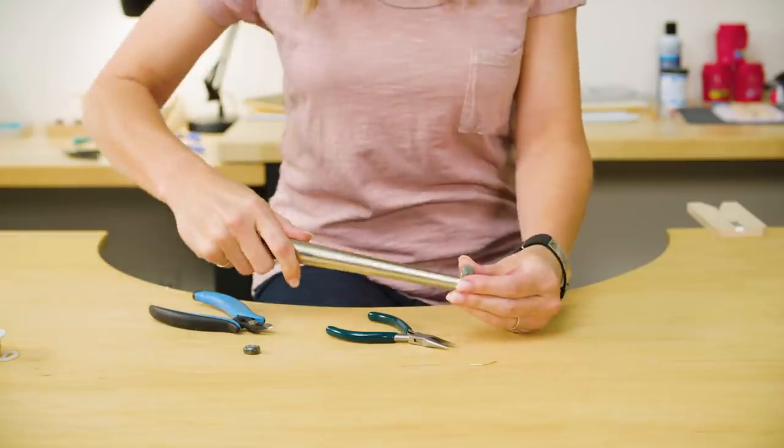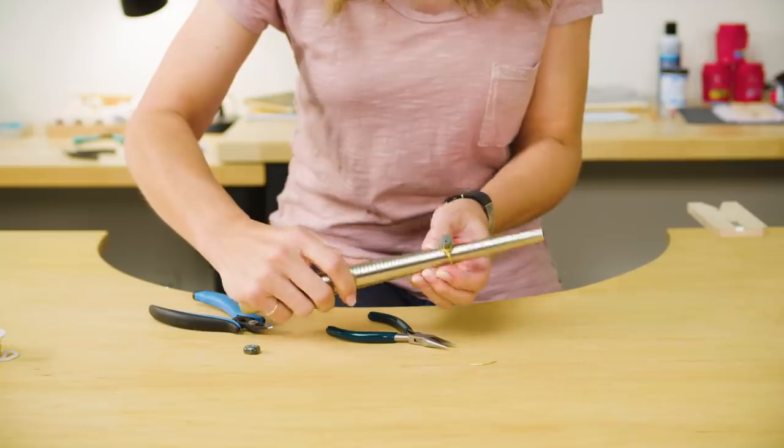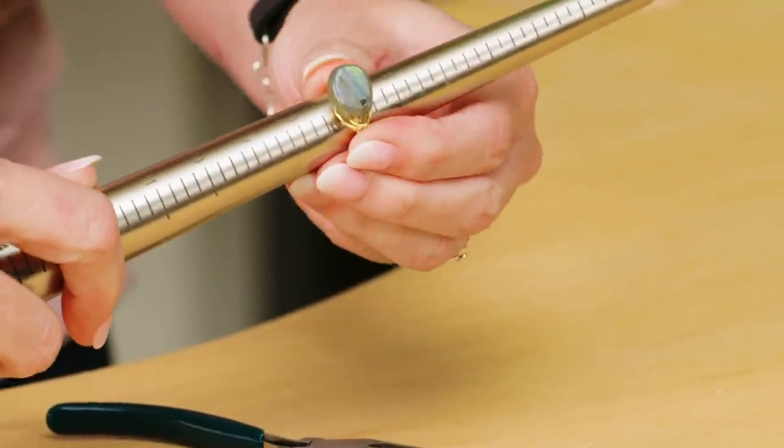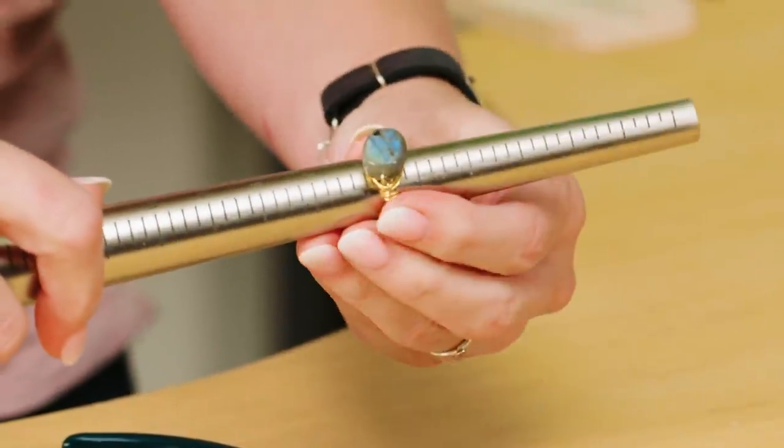And then last step is you want to put that back on the ring mandrel, and you want to push it up to the size you were going for. So you see, I was going for a size seven, so I'm just a little under that. So I'm just going to push the ring up to the size seven and kind of stretch it.